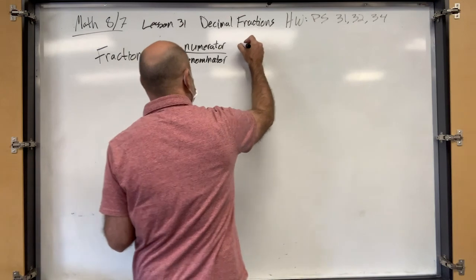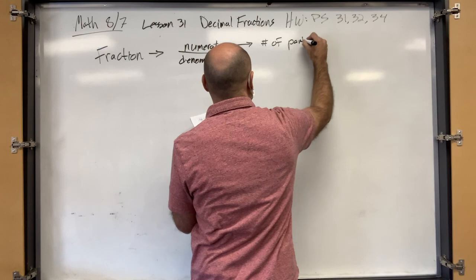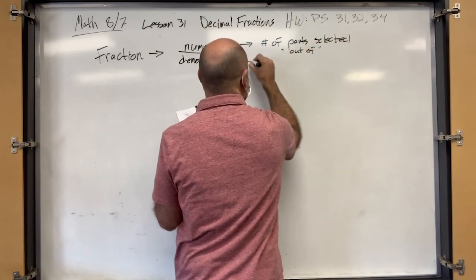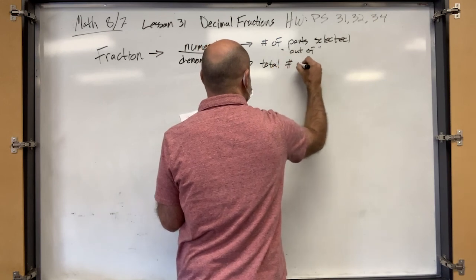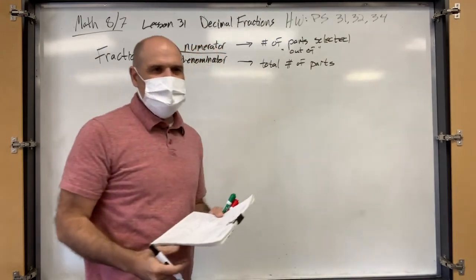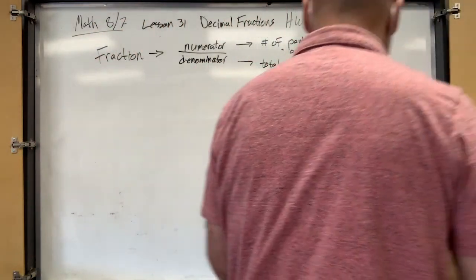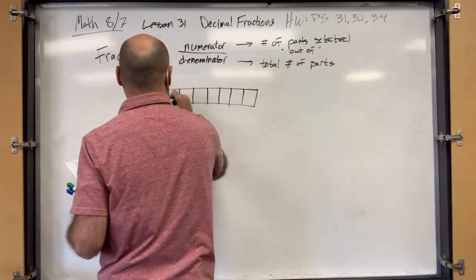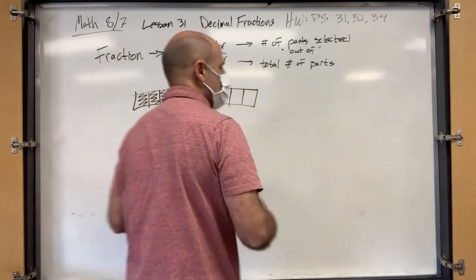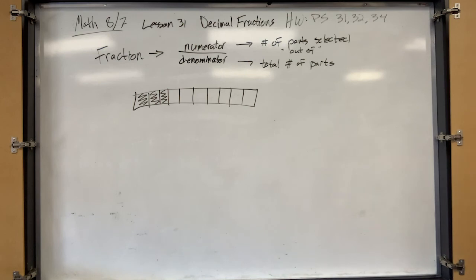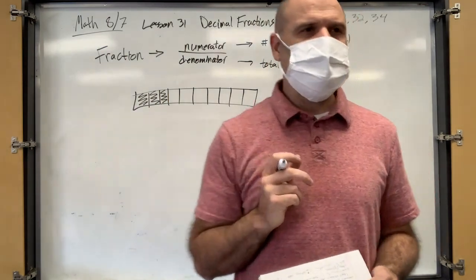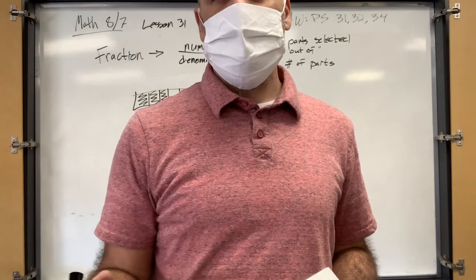So this is, remember, this is the number of parts selected out of total number of parts. So if you have like a candy bar, what fraction is shaded? Can you see that? Might have to squint a little bit. Three. Three out of how many? Ten. Three tenths. Not eight. Nice. So three tenths. So what fraction is not shaded? Seven tenths. Good job.